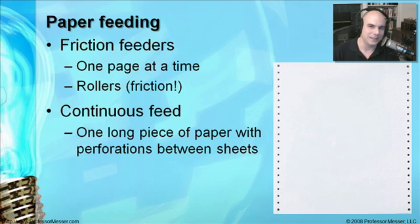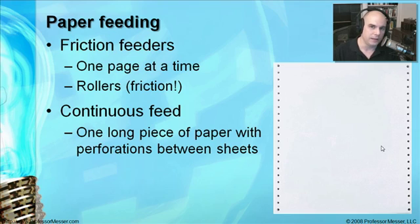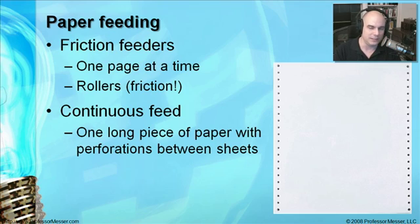There's also something called continuous feed paper. You've seen these before, with the little holes down the side. Those holes are there because rollers inside the printer pull the paper through with little pins. It's got perforations between sheets so it can break them off when one sheet is done. Essentially, if you look at the box behind it, it's one long sheet of paper being pulled through with holes on the side.